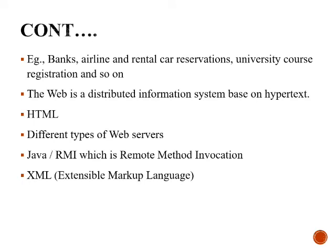Examples include bank, airline, rental car reservation, university course registration, etc. Web documents are hypertext documents called HTML documents. They use different types of servers. Java is used as a programming language. XML is another type of language used to update the database.